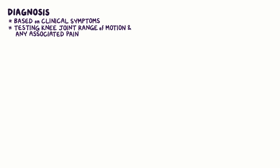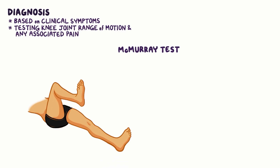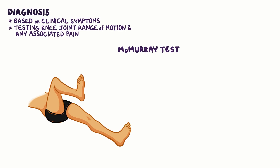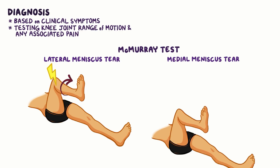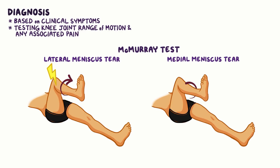The diagnosis of a meniscus tear is mainly based on clinical symptoms, in addition to testing knee joint range of motion and any associated pain. One of the tests used is the McMurray test, where the knee is bent, internally rotated, and then extended in order to compress the lateral meniscus. If the person feels pain while extending the knee, there is likely a lateral meniscus tear. The same is done to diagnose a medial meniscus tear, where the knee is bent, externally rotated, and then extended to compress the medial meniscus.